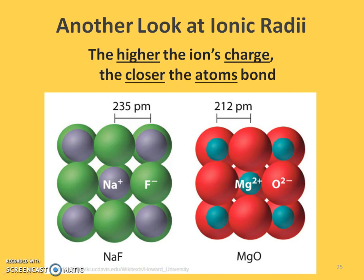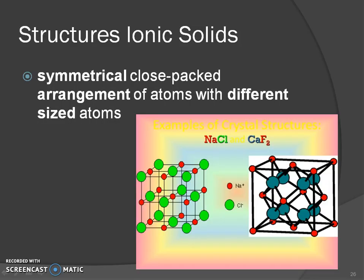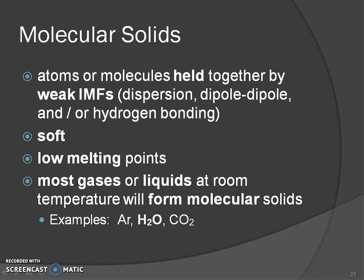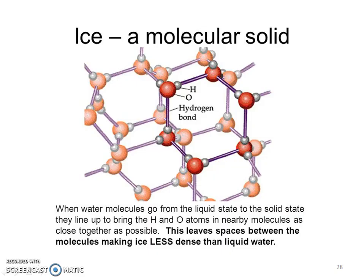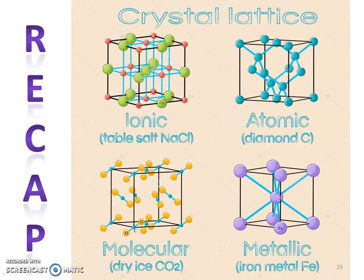The higher the ion charge — +1/-1 versus +2/-2 — the closer those atoms can bond, which means the stronger they are. You've seen the beautiful, symmetrical structures that ionic solids arrange themselves into. For molecular solids, we covered this in chapter 11 with IMFs. Water is an example where you can see the way those molecules are structured together in a crystalline lattice.